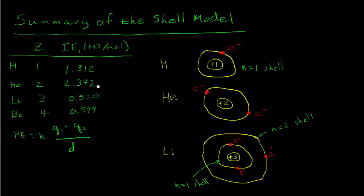Now looking at helium: it takes about twice as much energy to remove an electron from helium. Using the potential energy formula, Q1 is the electron's charge of minus one. In hydrogen, Q2 is plus one; in helium, the nuclear charge has changed to plus two. So minus one times plus two gives negative two — about twice as much potential energy — which accounts for approximately doubling the ionization energy. This is consistent with placing the electron at about the same distance d from the nucleus, so we put that second electron in the same shell.